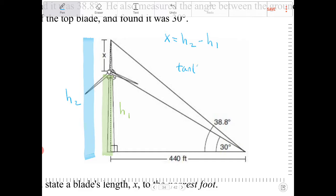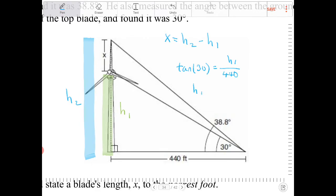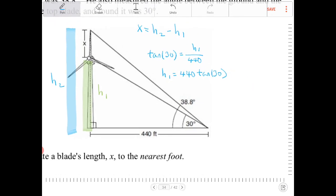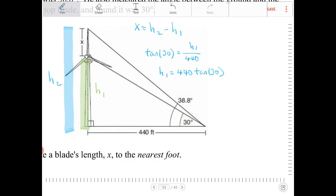So tan 30 equals h1 over 440. Solving for h1, h1 equals 440 times tan 30. Similarly, I can perform the same calculation to find what h2 is.